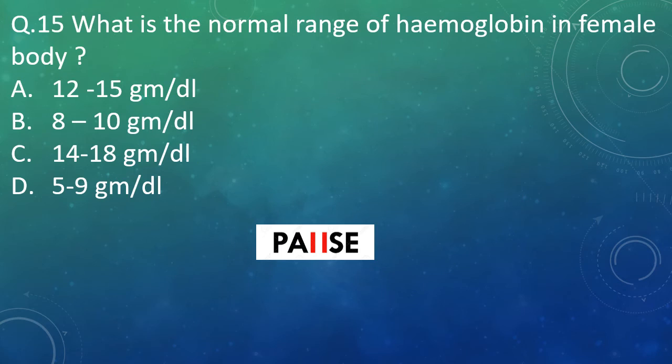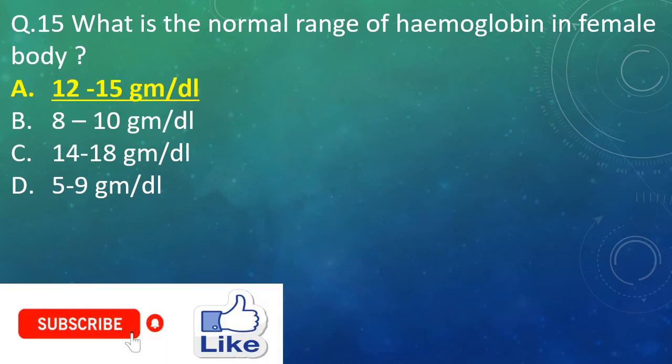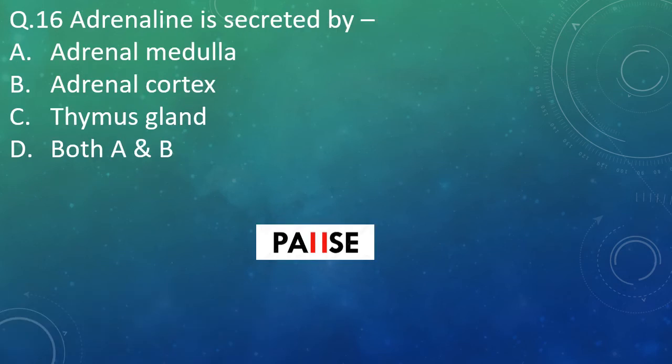Question 15: What is the normal range of hemoglobin in the female body? Option A: 12 to 15 grams per deciliter. And the right answer is Option A — 12 to 15 grams per deciliter.